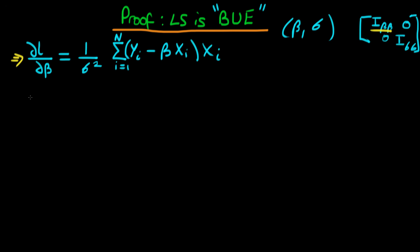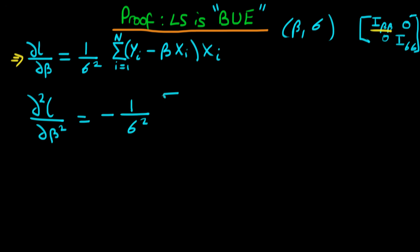Taking the second derivative of the log likelihood with respect to beta — d²l over dβ² — the one over sigma squared stays, and from the bracket the only term remaining is x_i times x_i. So we get minus one over sigma squared times the sum from i equals one to n of x_i squared, and this is defined as I_beta_beta, the top left component of the information matrix.